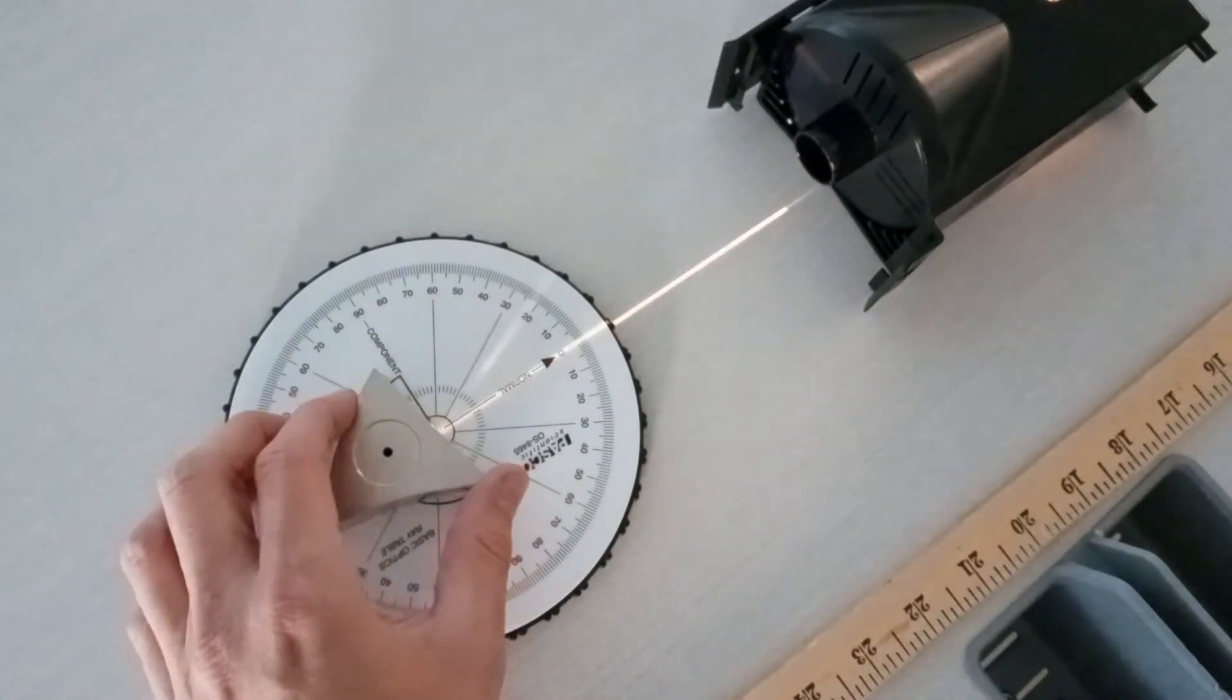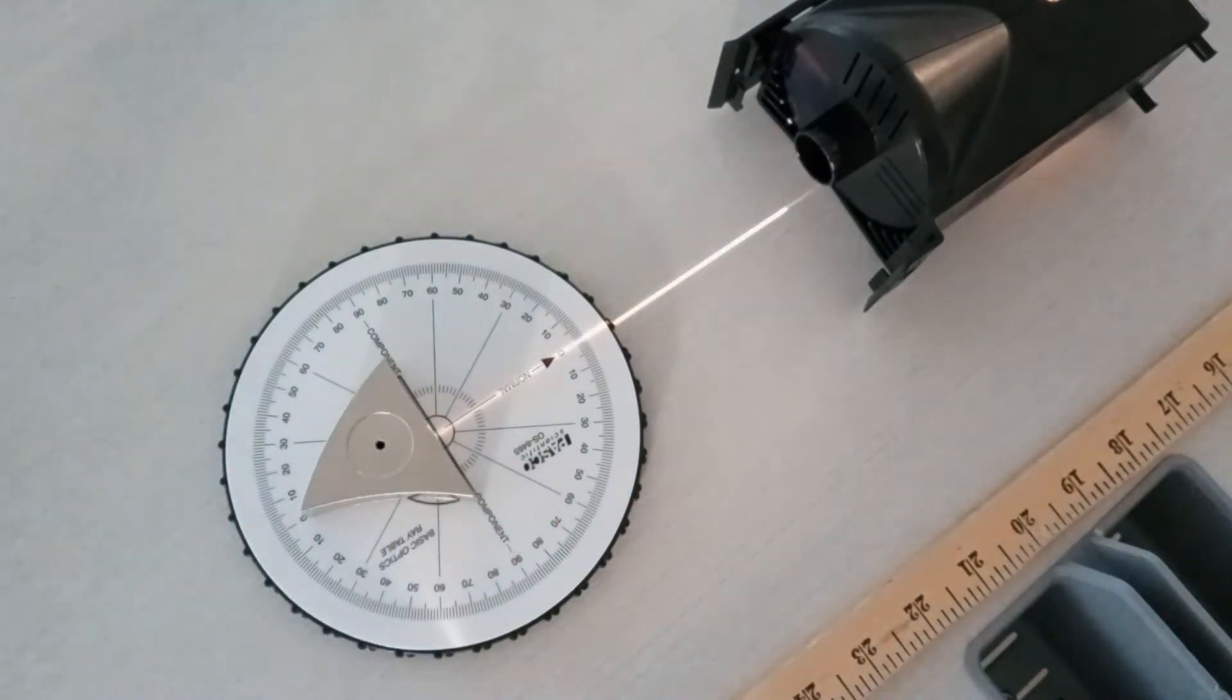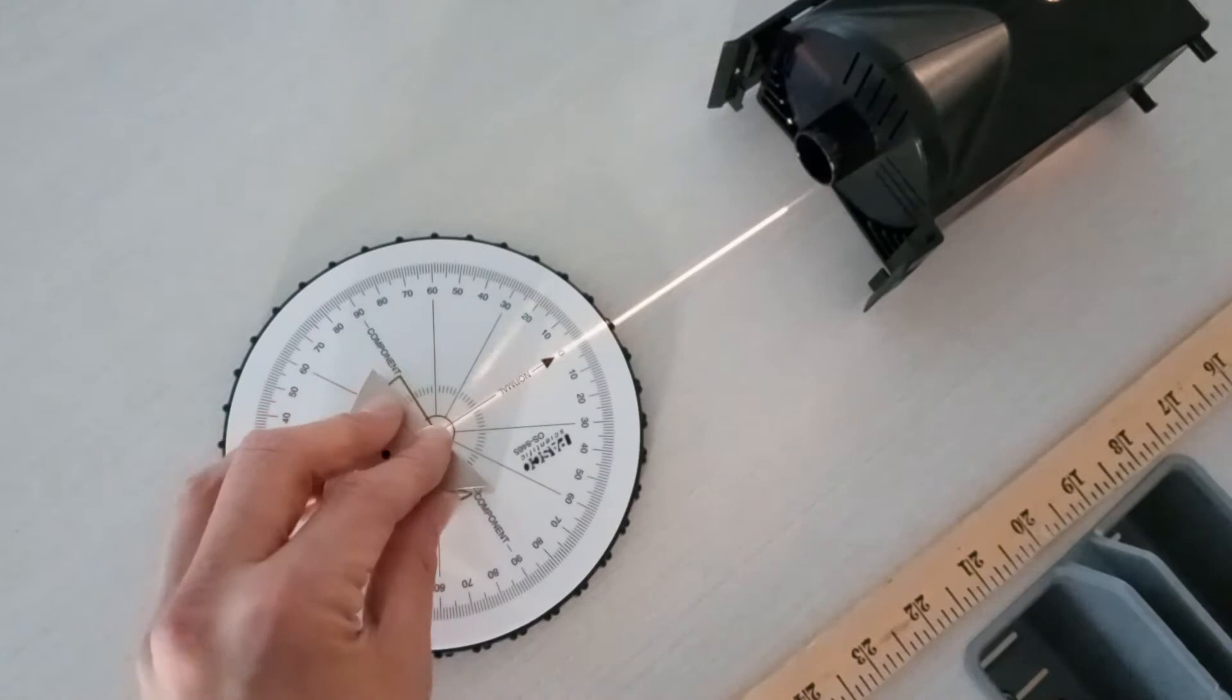If we project a light beam at the flat side of the triangular mirror, we can study the angles of incidence and reflection.